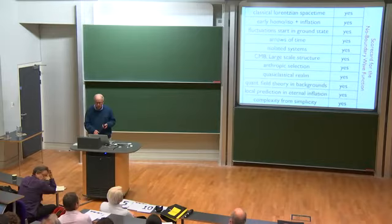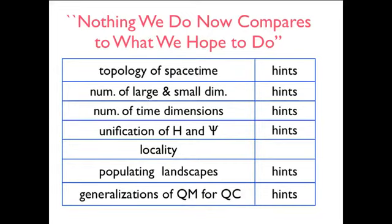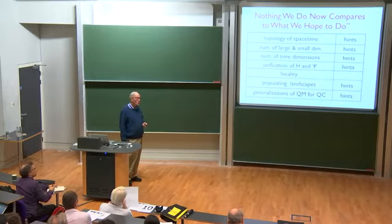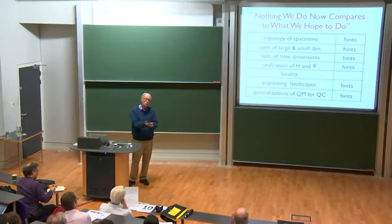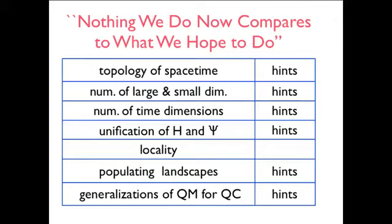So that's the scorecard of the wave, no-boundary wave function. But nothing we do now compares to what we hope to do. There are many other things that might be predicted if we could manage them. The topology of spacetime. After all, the topology, geometry, spacetime geometry, is a metric on a manifold. So it should predict something about the manifolds. And there were, very early on, there were works about how that goes. And Gary Gibbons and I wrote a paper many decades ago, which also gives some hints, and that might be true. The number of large and small dimensions. Why are there four large ones, and the rest of them are curled up? A number of time dimensions. Why do we only have two? Well, it turns out that doesn't really work very well with the no-boundary wave function. For a reason I could describe easily, but there's not time to do it.